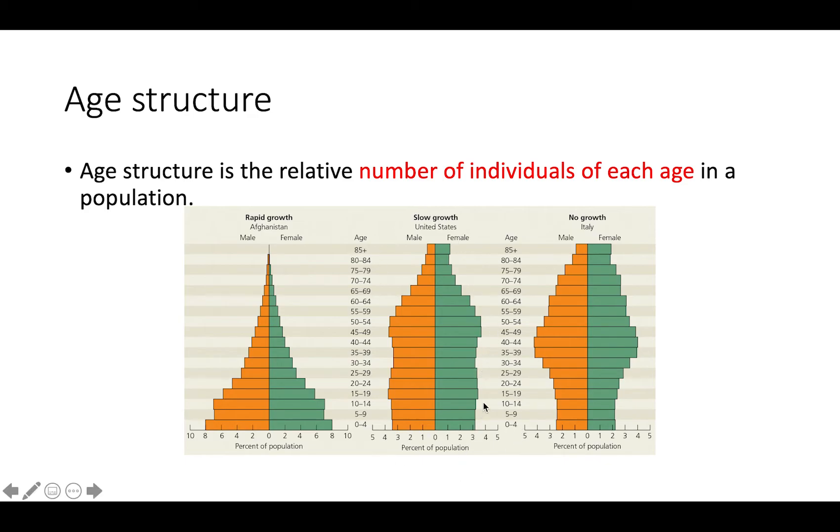For a country like the United States that has slow growth, it's mostly pretty uniform except for at the top where you have fewer individuals of an older age. As these individuals become of reproductive age, they're going to have their own children, but because it's pretty uniform amongst the majority of the age groups, you're going to have a slower growth rate than you would in a country that has a pyramid shaped age structure.